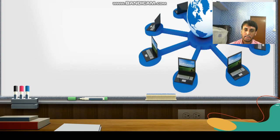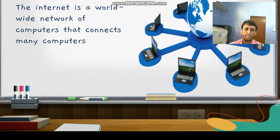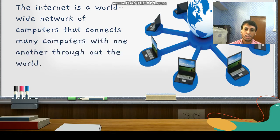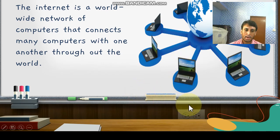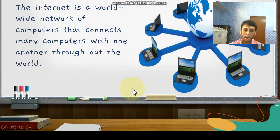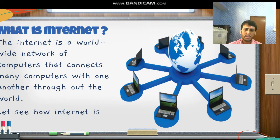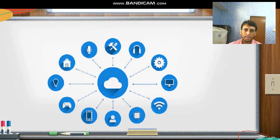What is the internet? The internet is a worldwide network of computers that connects many computers with one another throughout the world. You can see this globe representing the world, and there are devices that are all connected. Whether you are living in Motihari or somewhere else, it doesn't matter — you will be connected.